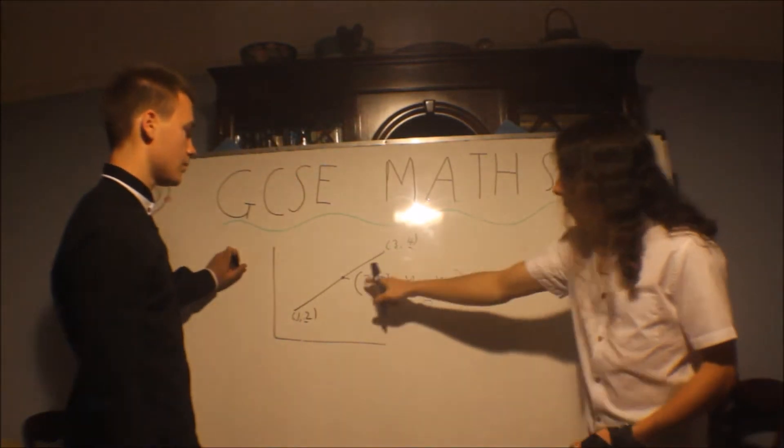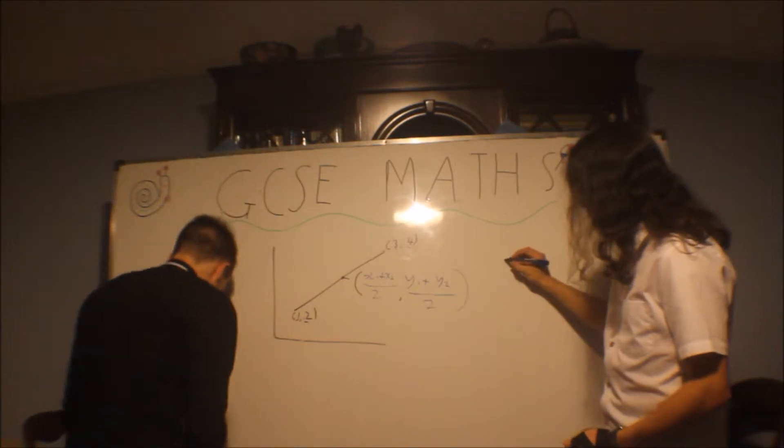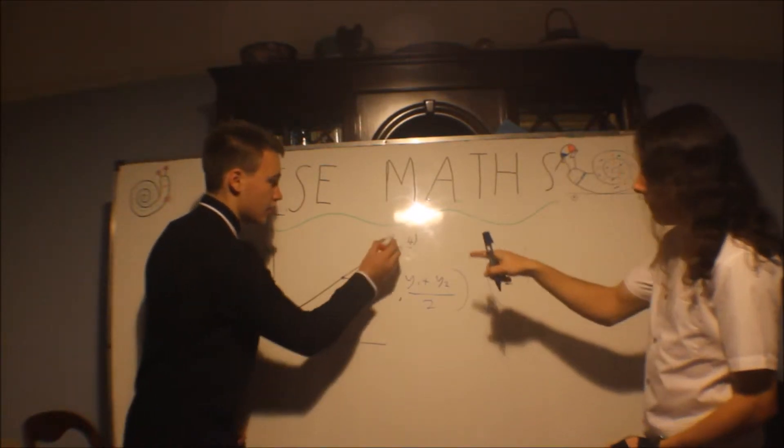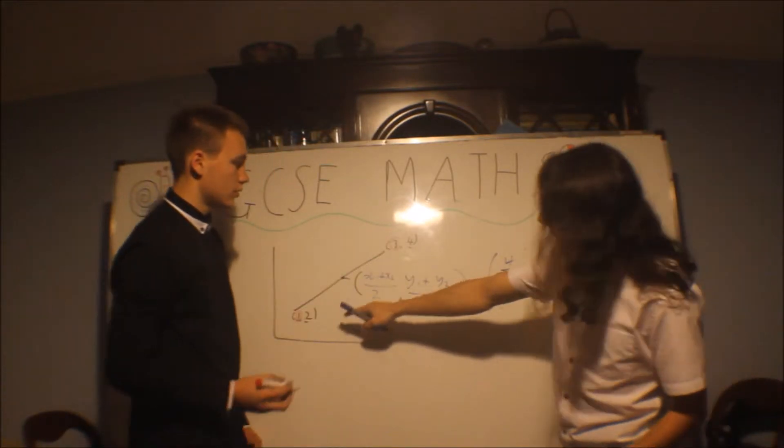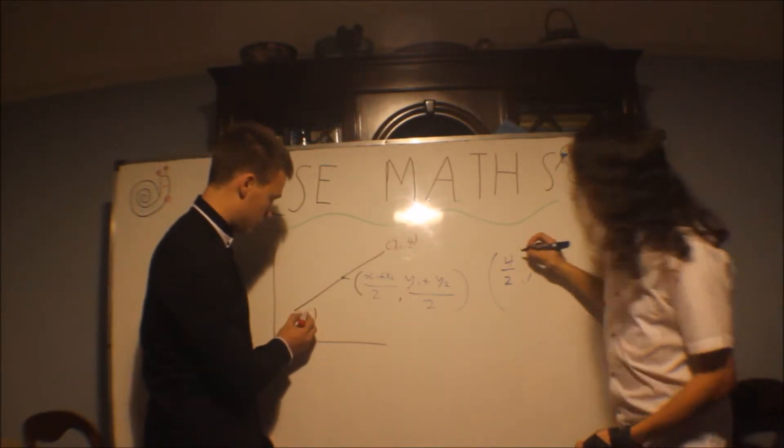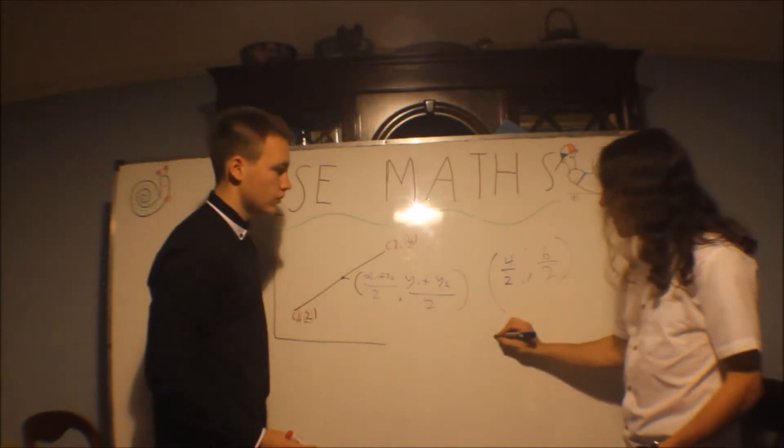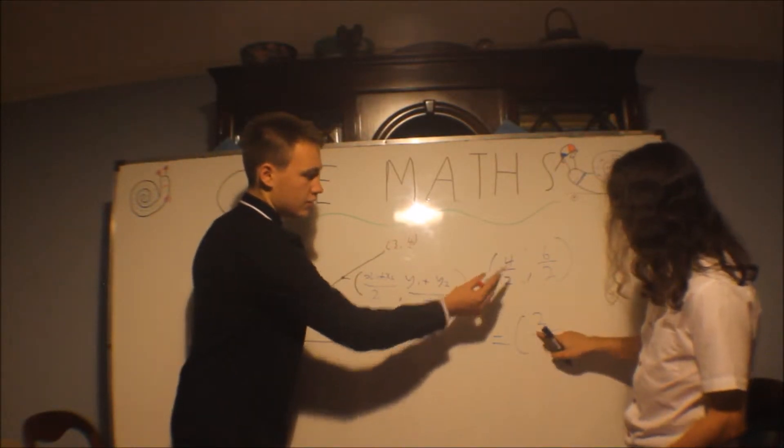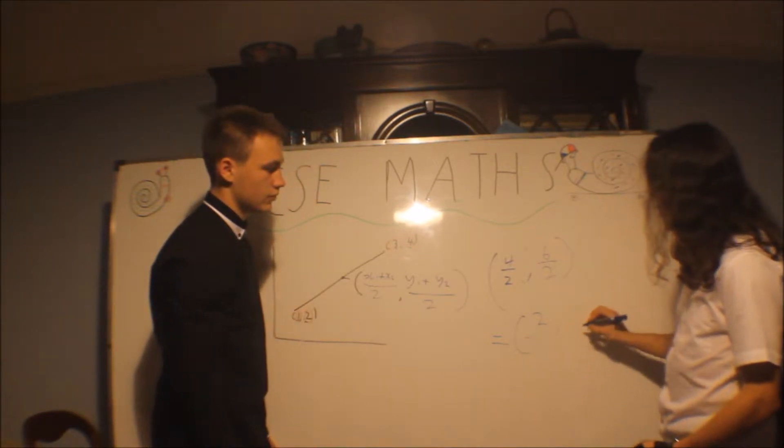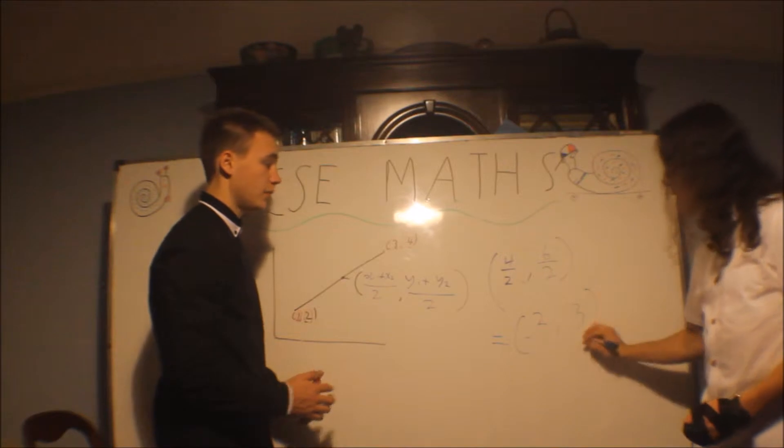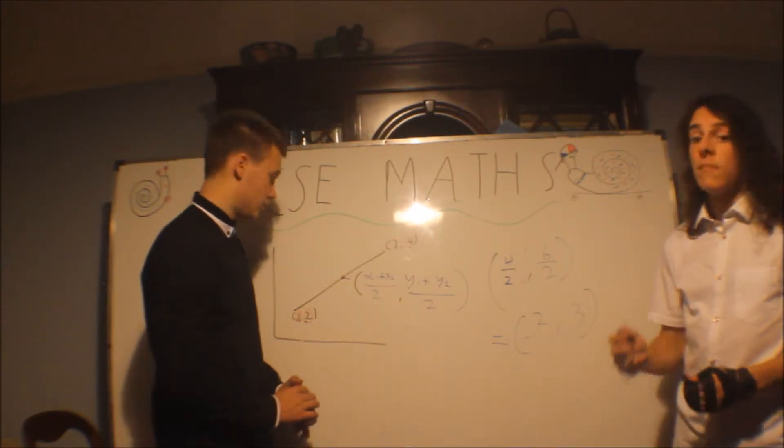It is, so these things would be 3 plus 1, which is 4, over 2. Yep. Because x1 is 1, that's the first coordinate, and the second coordinate is 3. Yep. And the y would be 4 plus 2, which is 6 over 2. So, our final coordinate, midpoint, is 2, which is 4 divided by 2, 2 and 3. And that would be the coordinate of the midpoint. Absolutely.